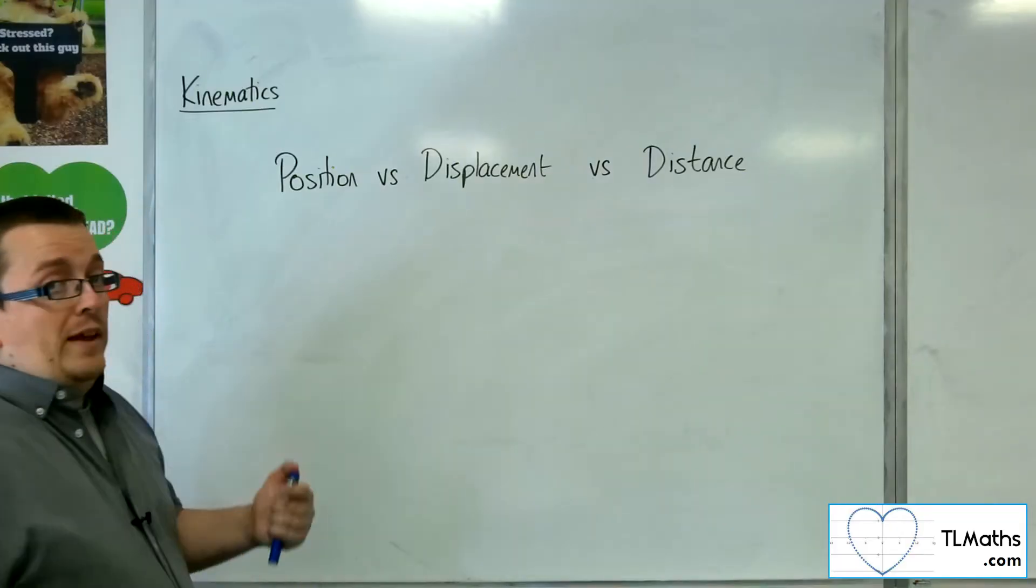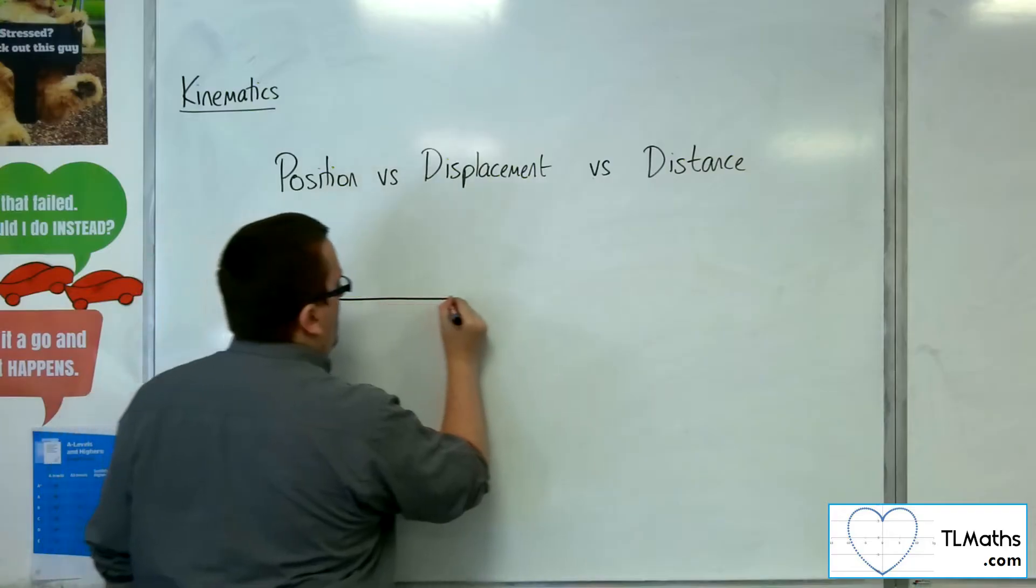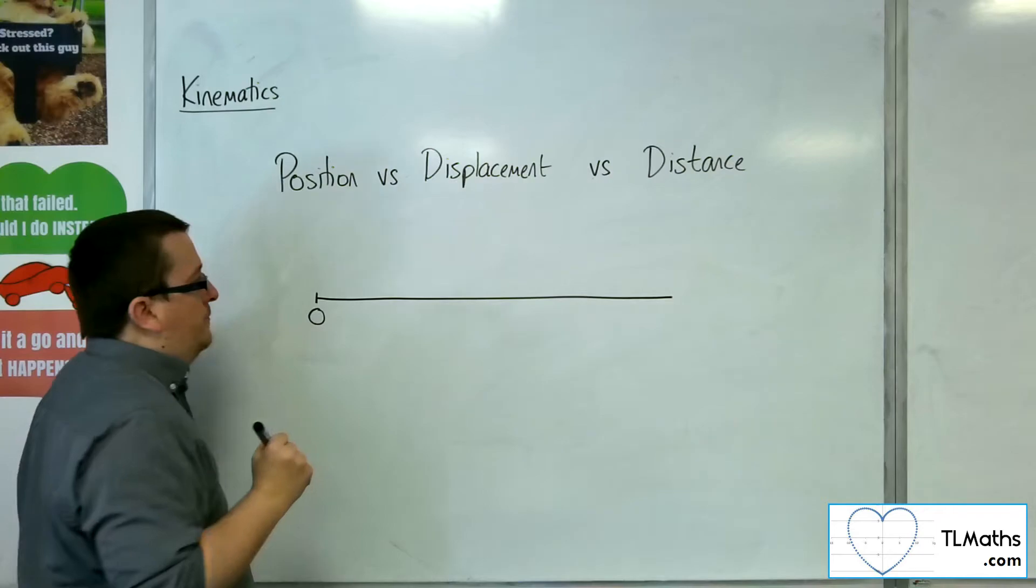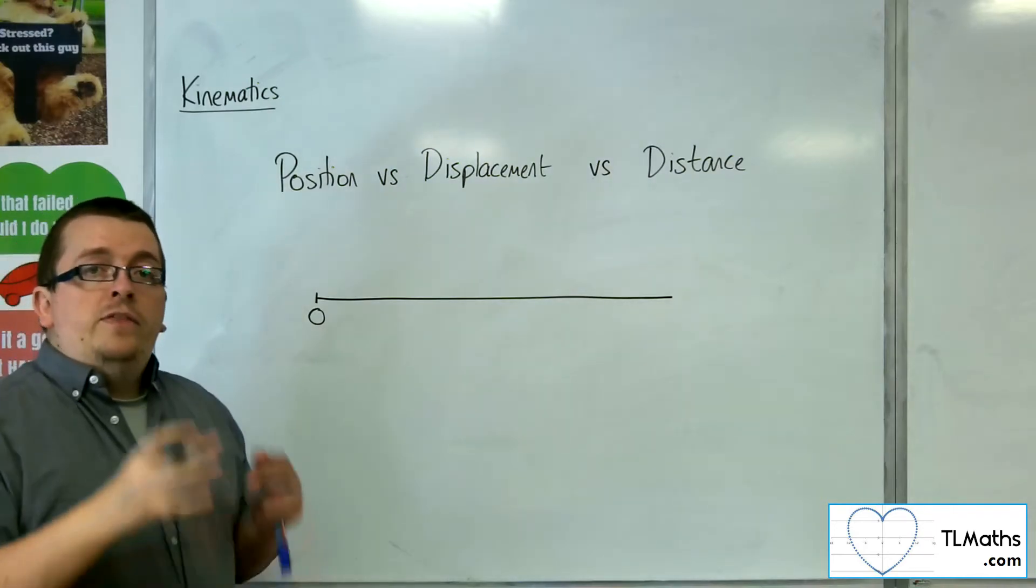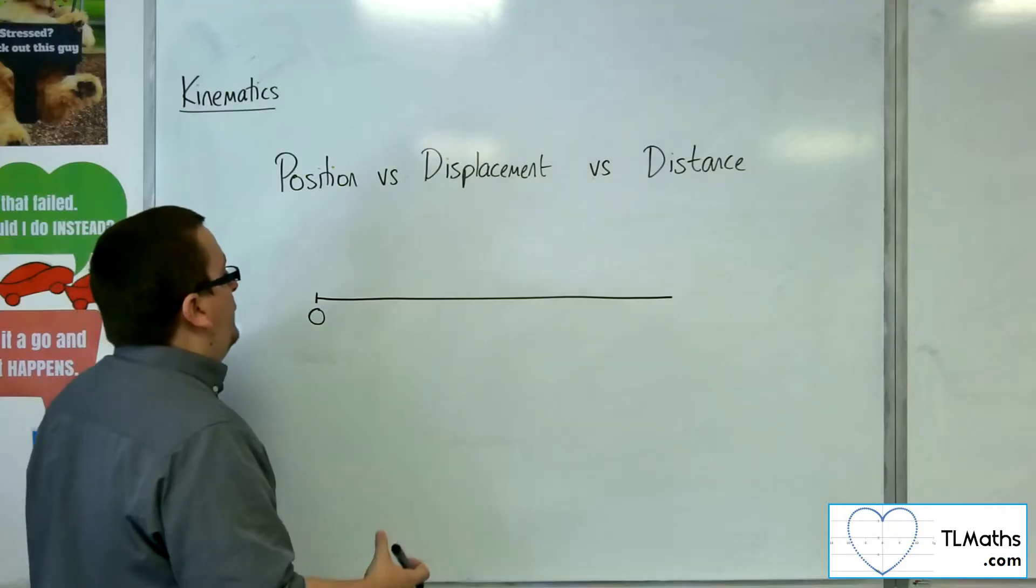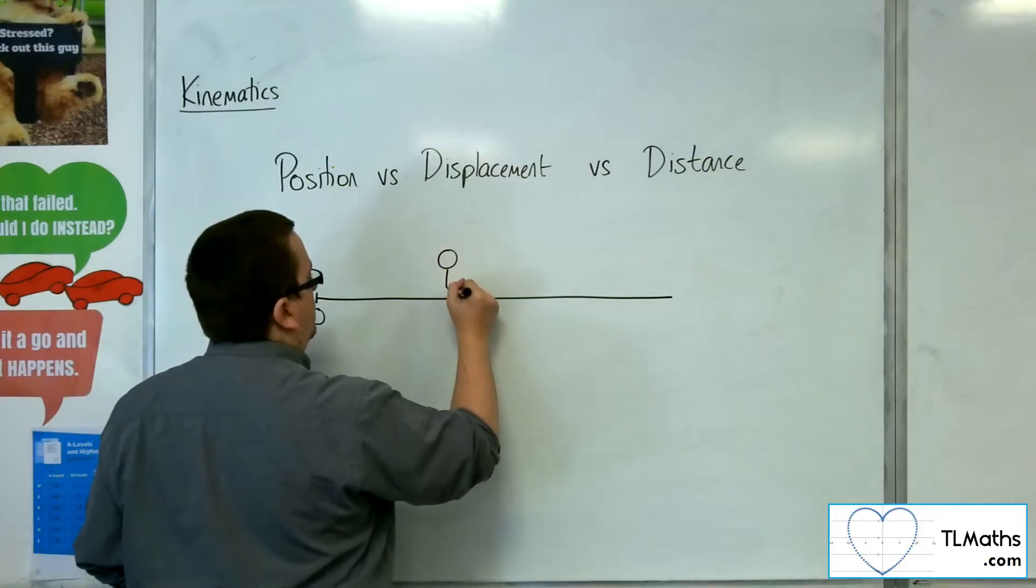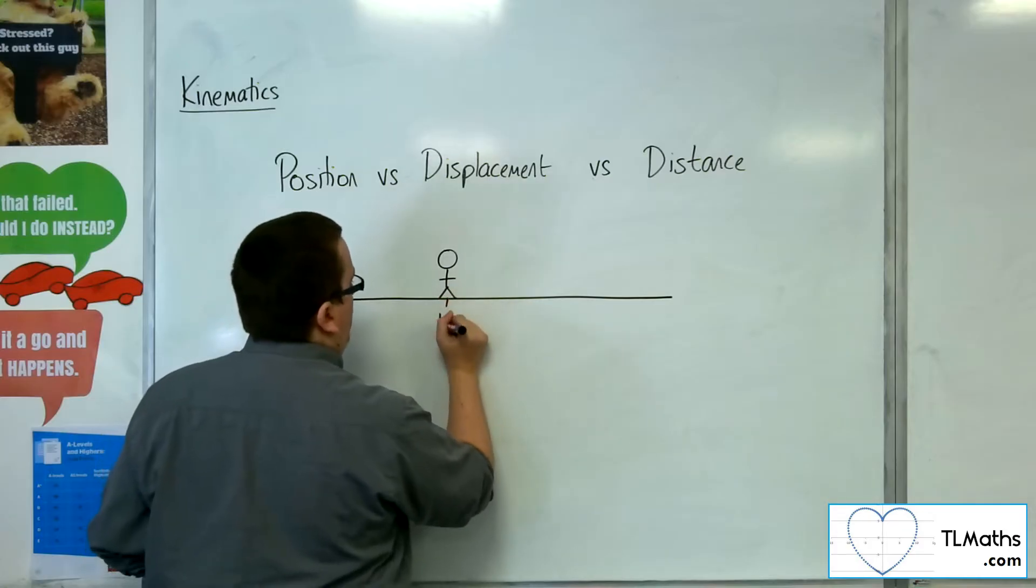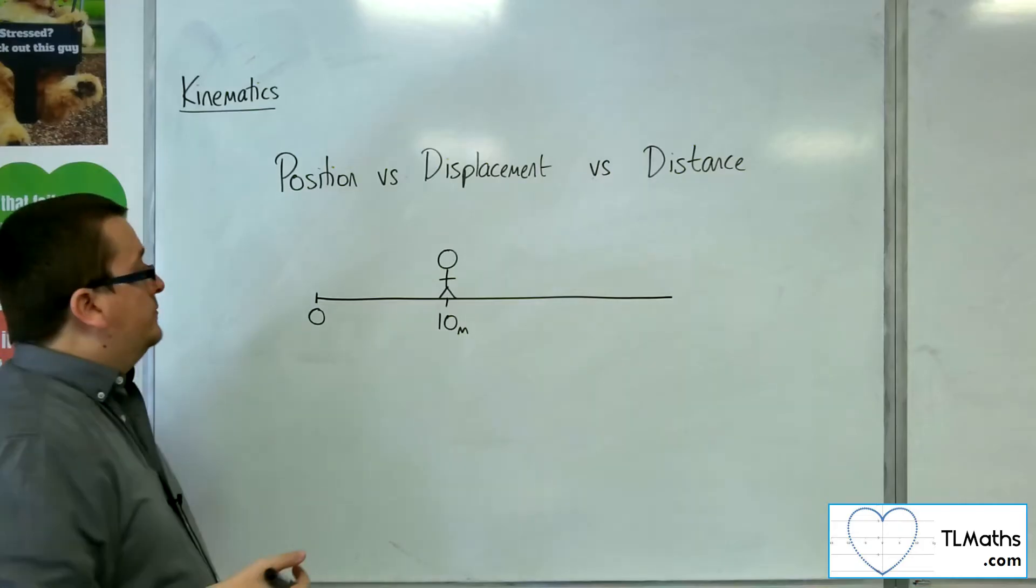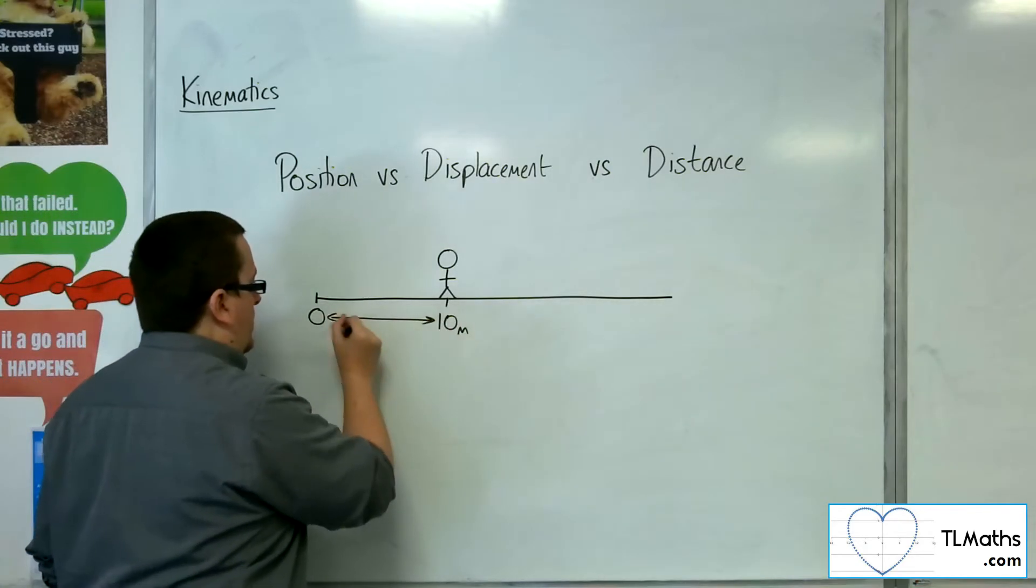So let's say, for example, we just look at a one-dimensional problem where here is the origin, and from the origin that is where I measure position. And let's say that I've got this person here, who is stood 10 metres away from the origin.